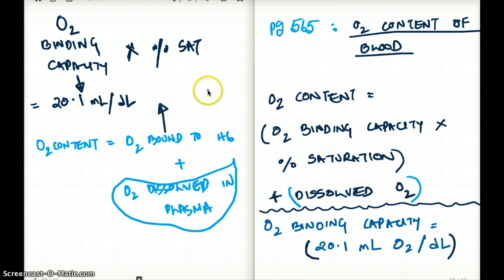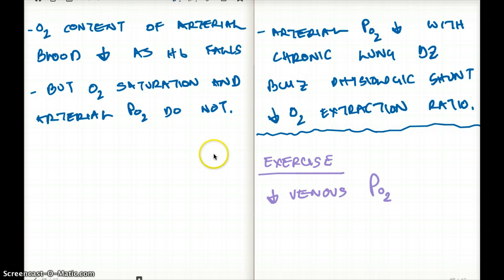Now percent saturation is kind of interesting. In a normal blood, the person's saturation is about 15 gram per deciliter. That's a normal amount of hemoglobin in blood.